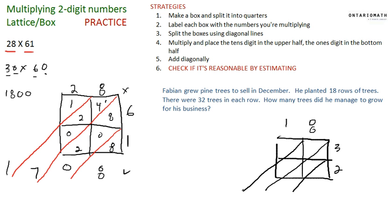I'm just going to make the lines. 1 times 3 is 3, 1 times 2 is 2, 8 times 3 is 24, 8 times 2 is 16. Adding diagonally: 6, 4 plus 2 is 6, 2 plus 4 plus 1 is 7, 5.